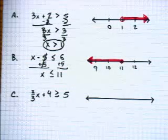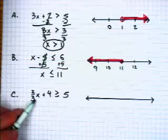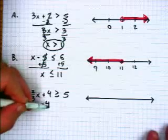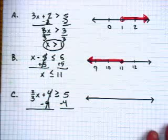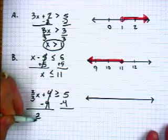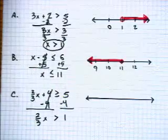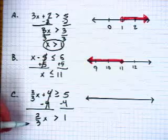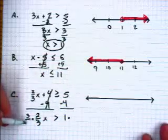So let's take a look at the third example. We want to solve for x. Get the x alone. We're going to start by subtracting 4 from both sides. That leaves us with 2 thirds x is greater than 1. Now we have to get rid of that 2 thirds. And the way we're going to do that, the way we always do that, is multiply by the reciprocal.